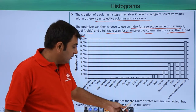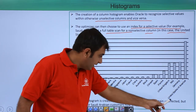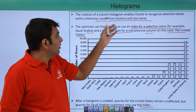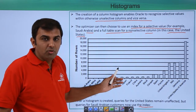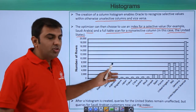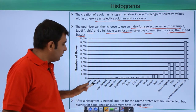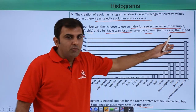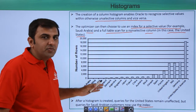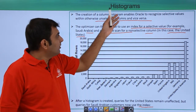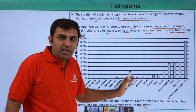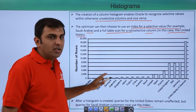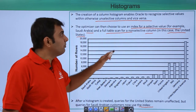Once you create the histogram, what happens is it will use a full table scan for the United States but an index scan for Saudi Arabia. After the histogram is created, the query for the United States remains unaffected, but queries for Saudi Arabia customers use the index. That is the main purpose of creating the histogram - because here the data is unevenly distributed in the table column, once you create the histogram it will generate the proper execution plan.